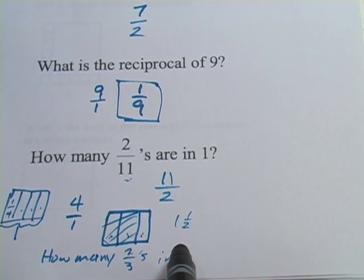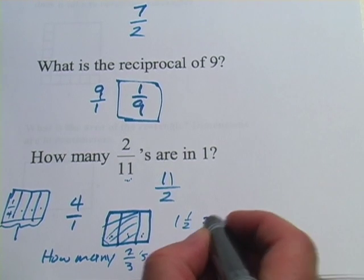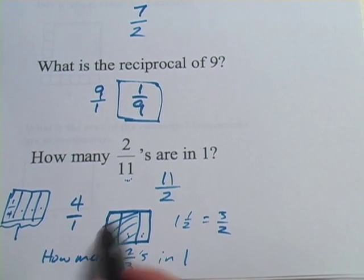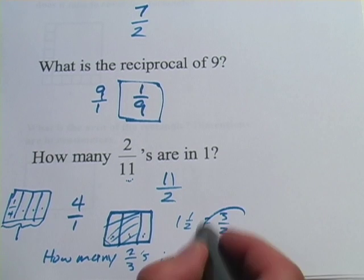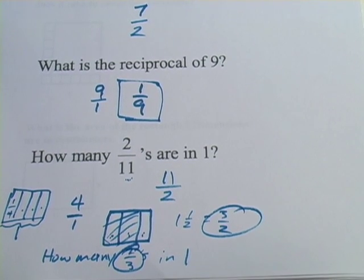And if we write that as an improper fraction, 1 times 2 is 2 plus 1 is 3, we get 3 halves. So it takes 3 halves, 2 thirds, to fill in that 1. And you'll notice, reciprocals. So that's a little bit of work with reciprocals.